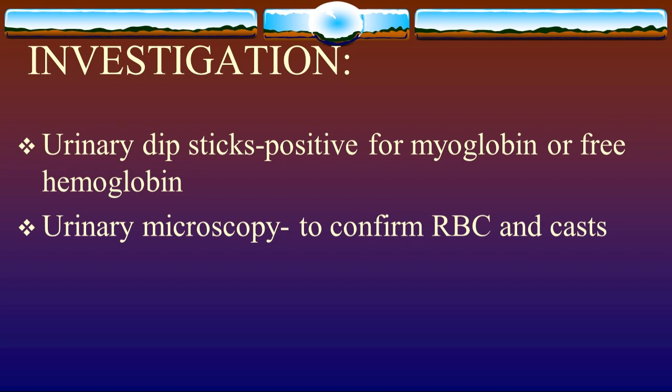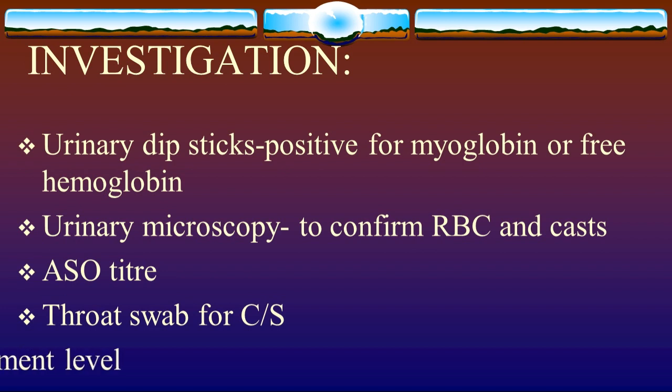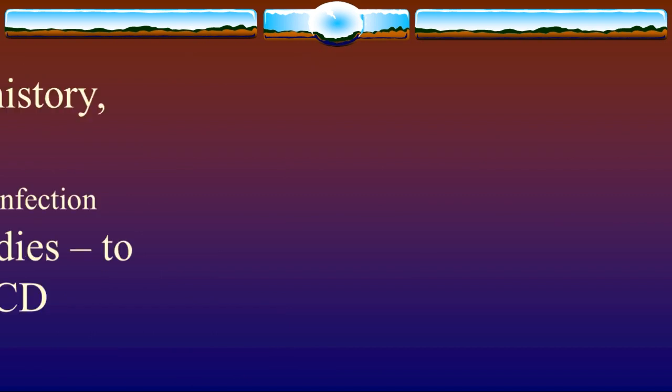Other causes of dark urine include bile pigment, free hemoglobin, myoglobin, food (such as beetroot), drugs (such as rifampicin), or blood from other sources such as menstrual blood, perianal lesions, or urinary crystals.